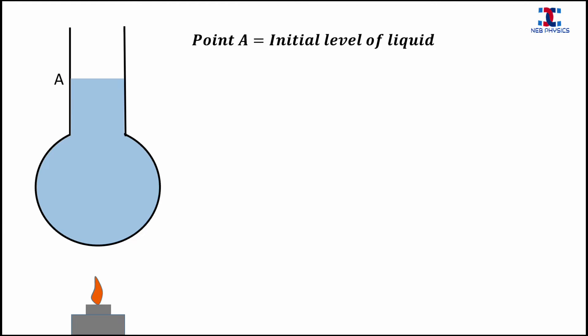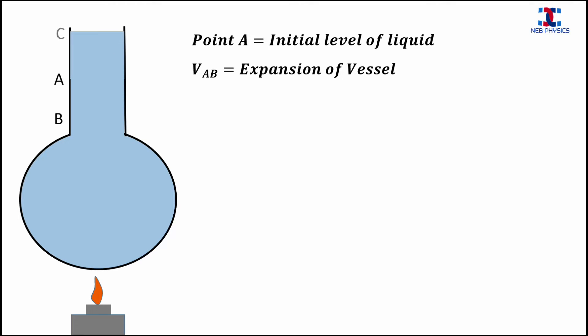So V_AB represents the volume expansion of the vessel. When the heat is supplied continuously, the liquid expands and rises from point B to point C.